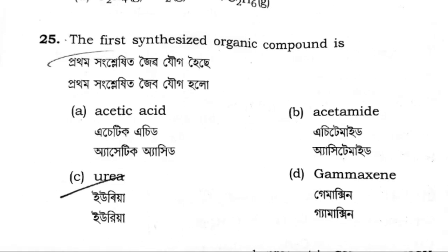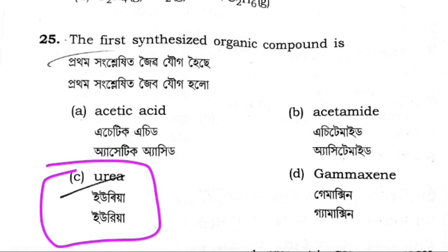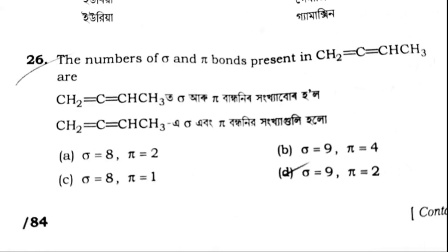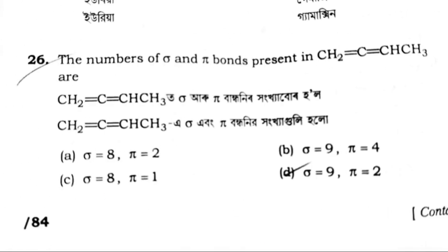The next one: the number of sigma and pi bonds is this.